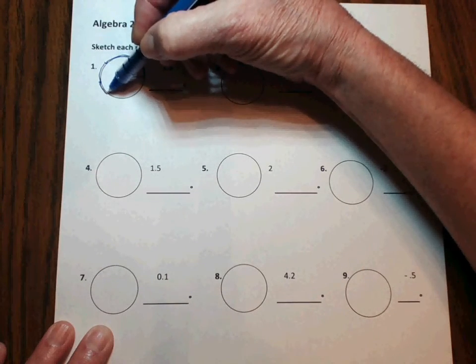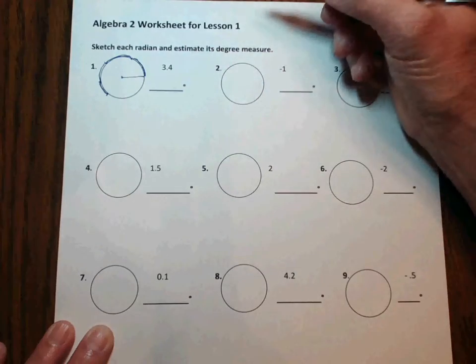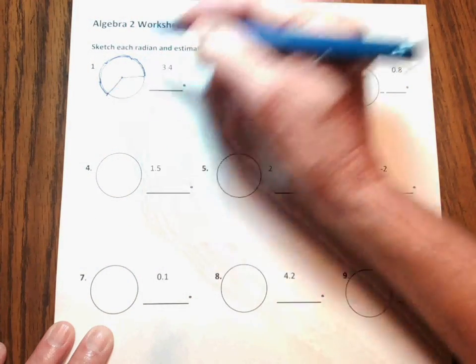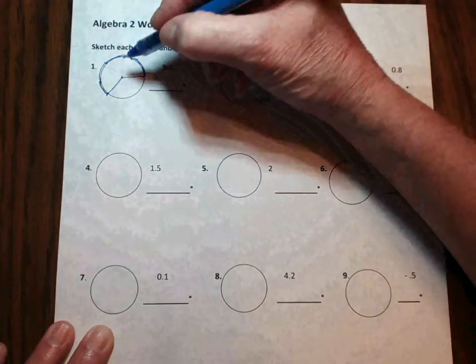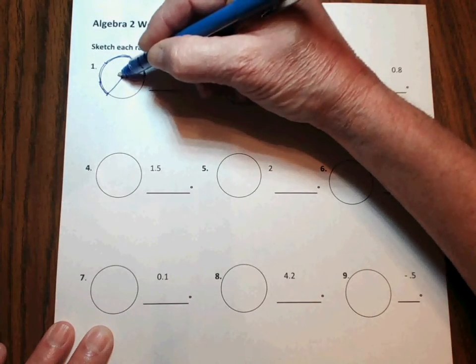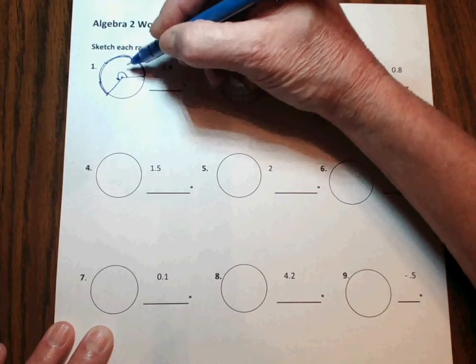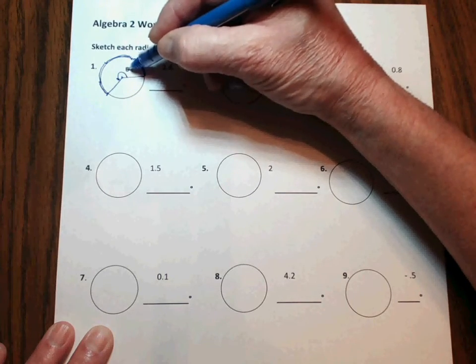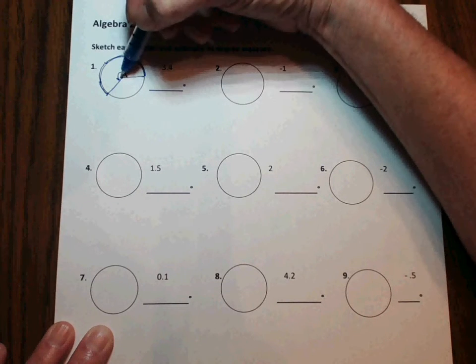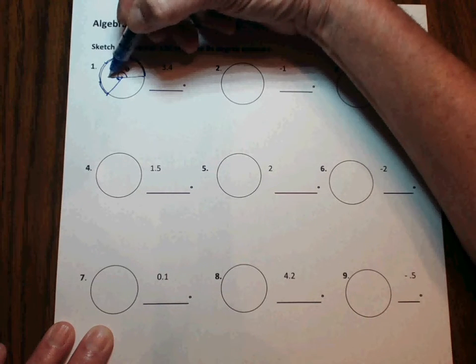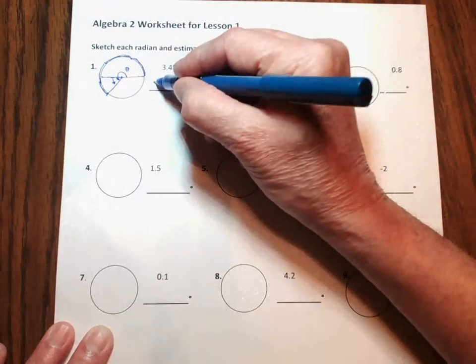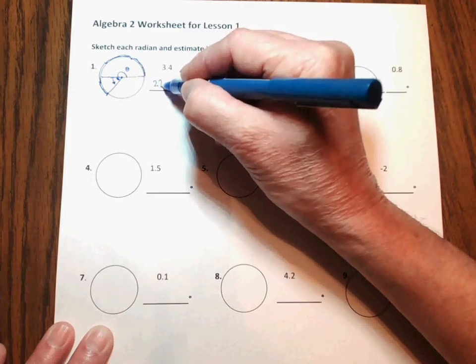To finish the angle, you would draw that radius. The angle that you've just drawn is right there. It'll be angle theta, and its degree measure is a little bit past 180. We'll say 220 just as an estimate.